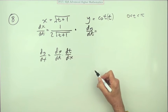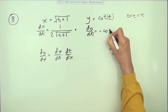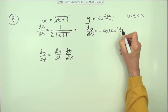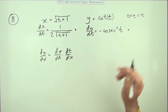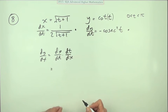This is even simpler as long as you can remember it. The derivative of cot is -cosec²t, so it'll be -cosec²t. That's a mark; you don't need to work anything out.